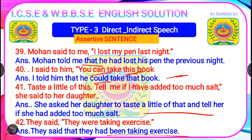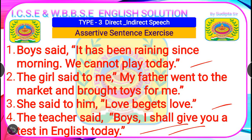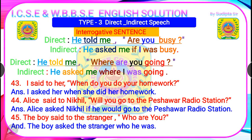Now here are some exercises for assertive sentences. Pause the video, write your answers in the comment box, and we will make another video to check your answers. Exercise 1: 'Boys said, it has been raining since morning, we cannot play today.' Exercise 2: 'The girl said to me, my father went to the market and bought toys for me.' Exercise 3: 'She said to him, laugh begets love.' Exercise 4: 'The teacher said, boys, I shall give you a taste in English today.'